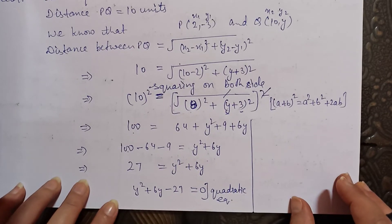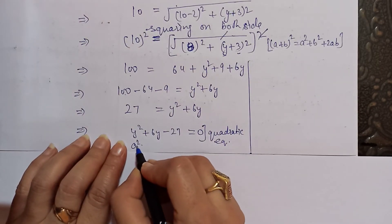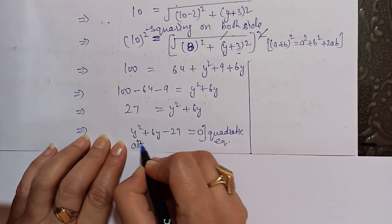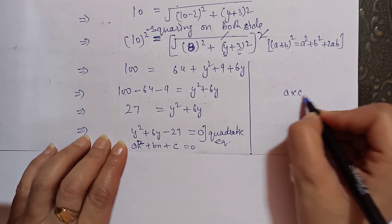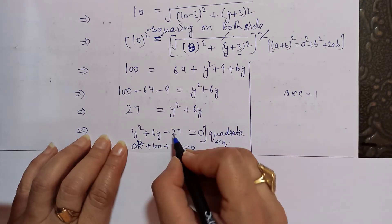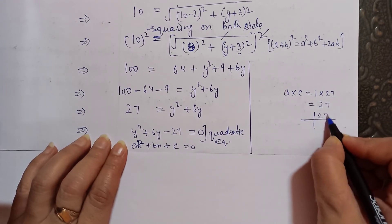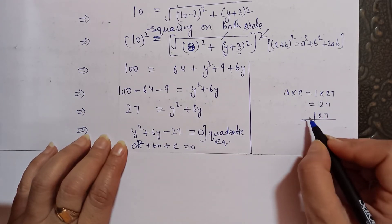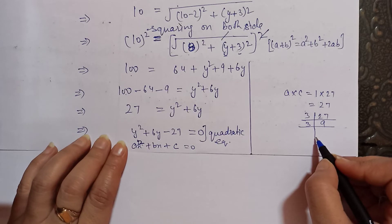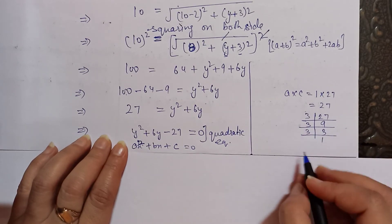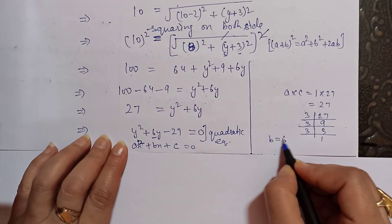So how do we solve the quadratic equation? The standard form is ax² + bx + c = 0. Here we multiply a and c: a × c = 1 × 27 = 27. Now we have to find factors of 27. We see what b is — b is 6. So we adjust the factors to sum to 6.